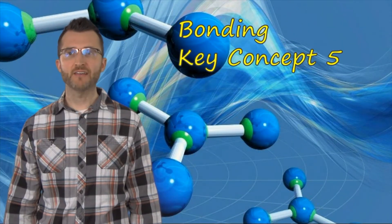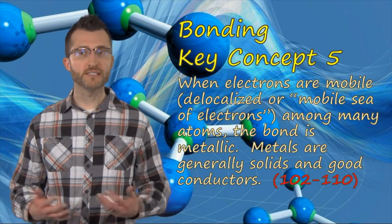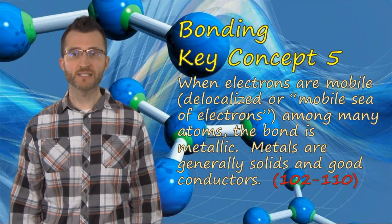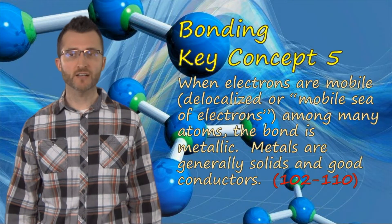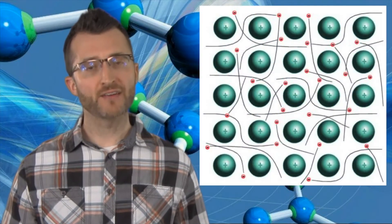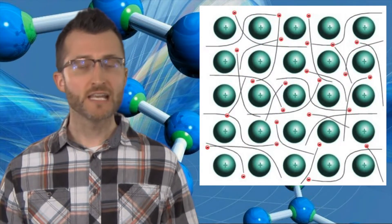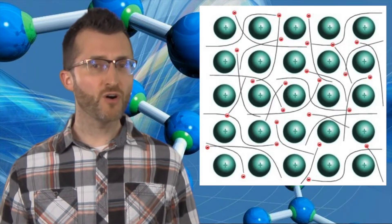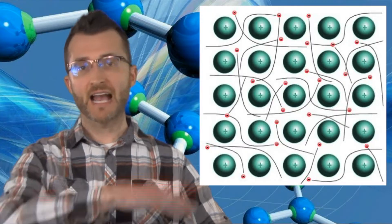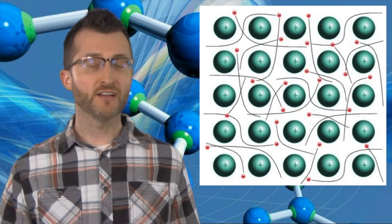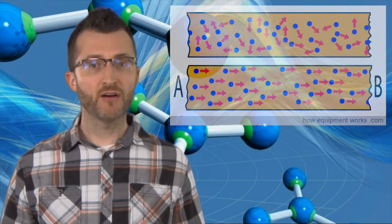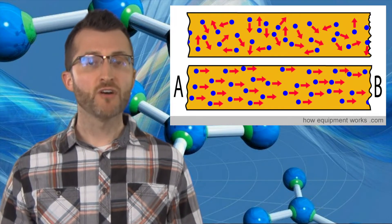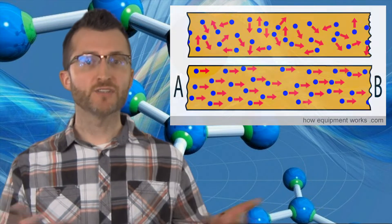Bonding key concept five. When electrons are mobile, delocalized or mobile sea of electrons, among many atoms, the bond is metallic. Metals are generally solids and good conductors. The reason why metals are such good conductors is because of this sea of electrons. The electrons are so weakly held by the metal atoms that they can kind of go wherever they want. They are delocalized. When we apply a current to the metal, this can cause the electrons to go from one area to another, A to B.